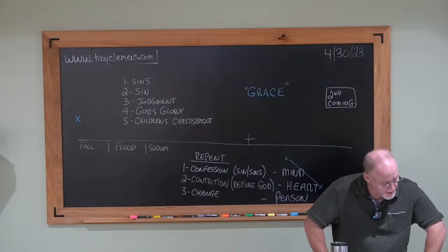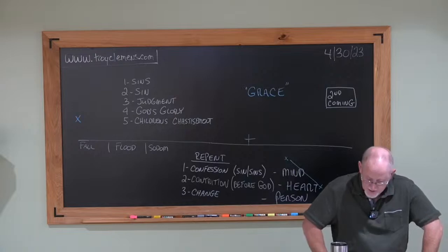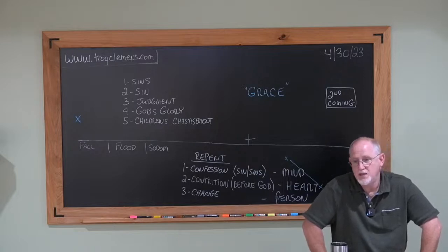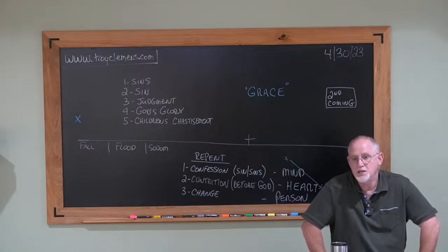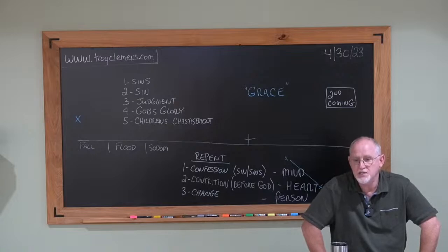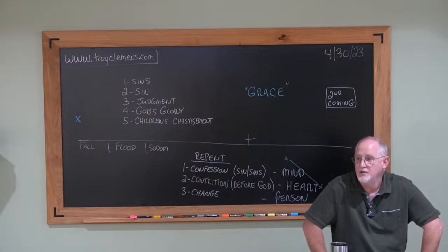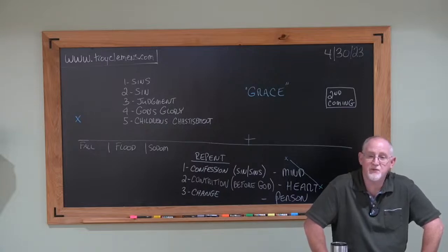All right, now verse 2, Jesus answering said unto them, Suppose you that these Galileans were sinners above all the Galileans because they suffered such things. Again, what he's basically saying is, okay, you're looking at it and you're not seeing it right. You think this happened to them because they were worse than others. You need to quit even thinking that way. You need to say, why do events like this happen at all? And why do events like this happen? Sin.